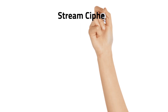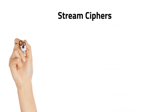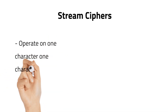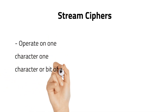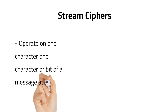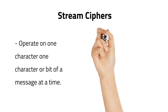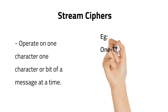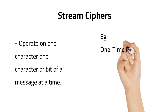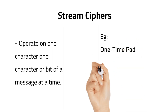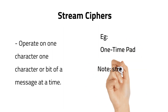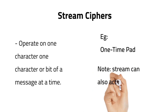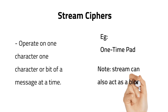Stream cipher operates on one character or one bit of a message at a time. A very good example is substitution cipher, as well as the one-time pad and Caesar cipher, because the algorithm operates on each letter of the plain text message independently. Stream cipher can also function as a block cipher: in such an operation, there is a buffer that fills up with real-time data, then it is encrypted as a block and transmitted to the recipient.